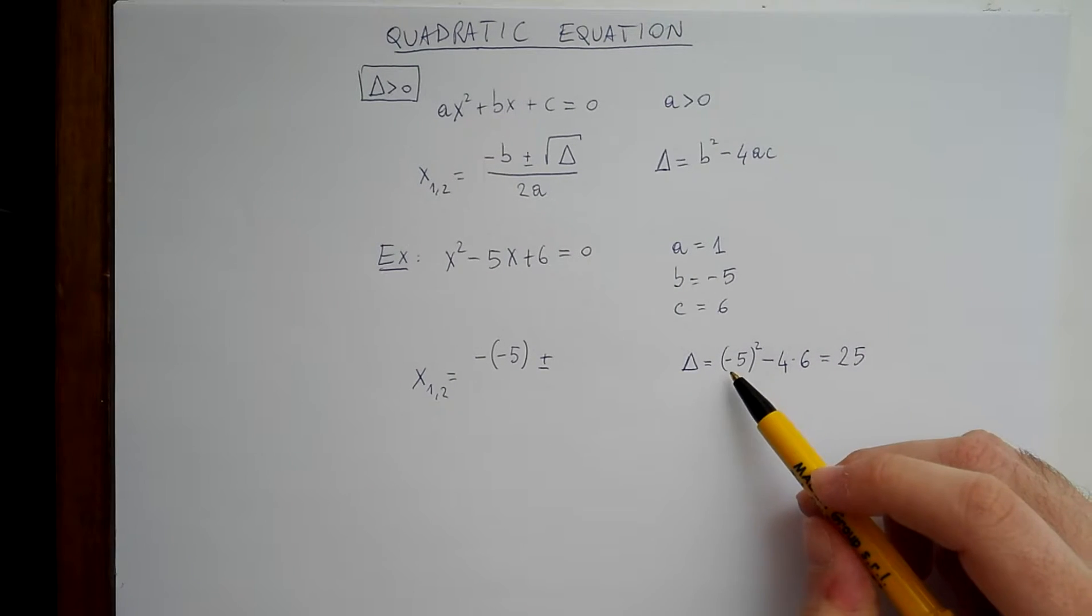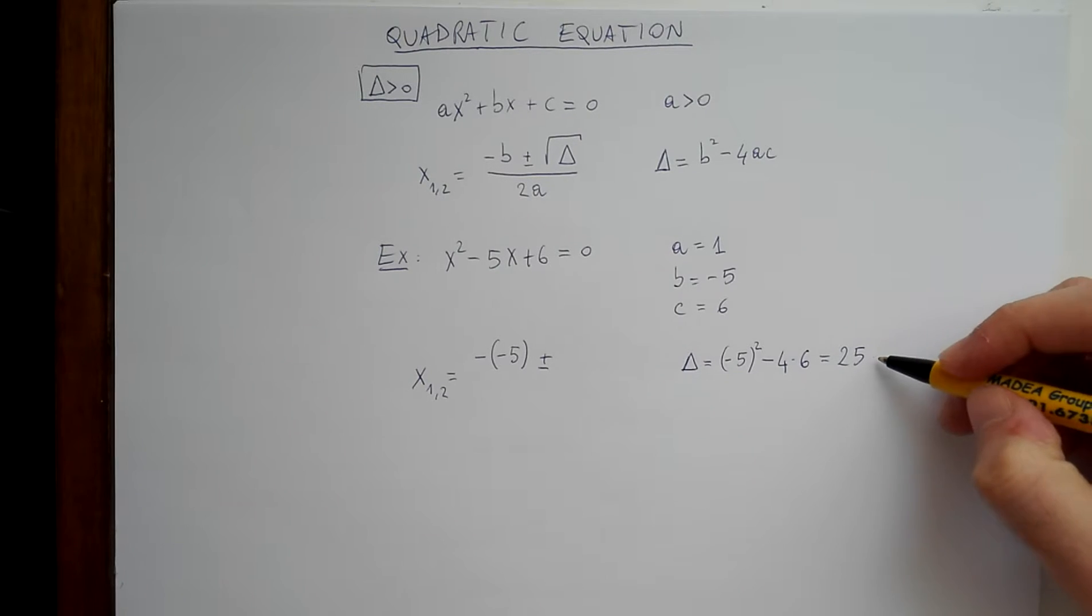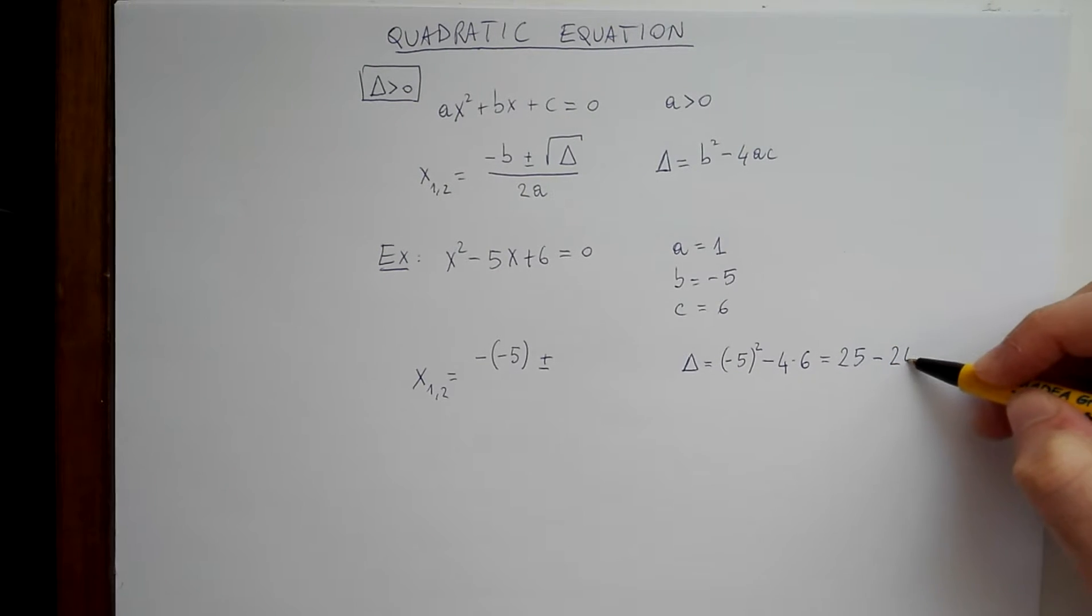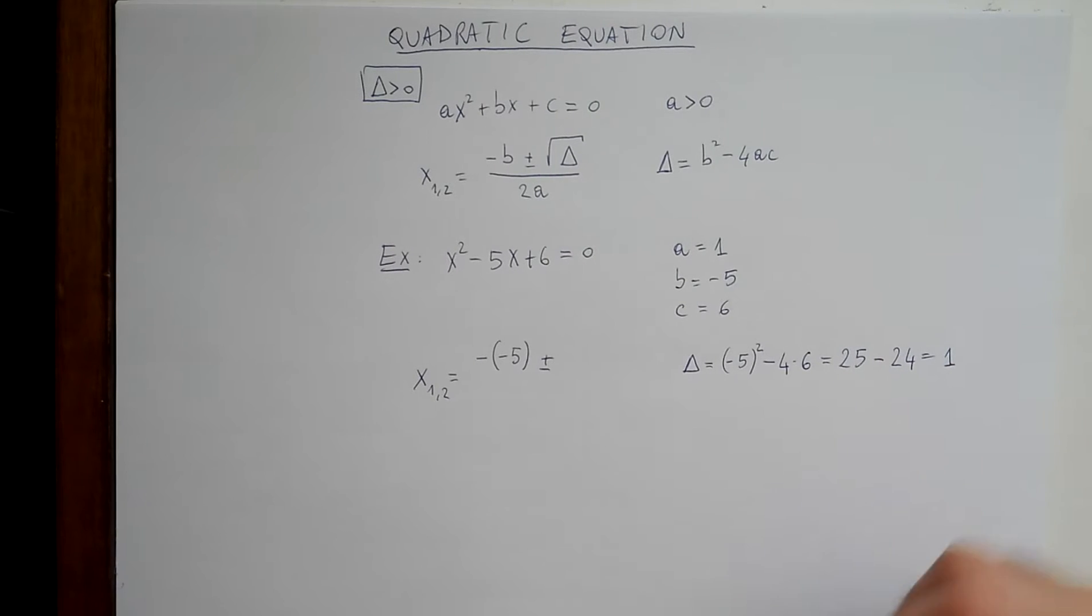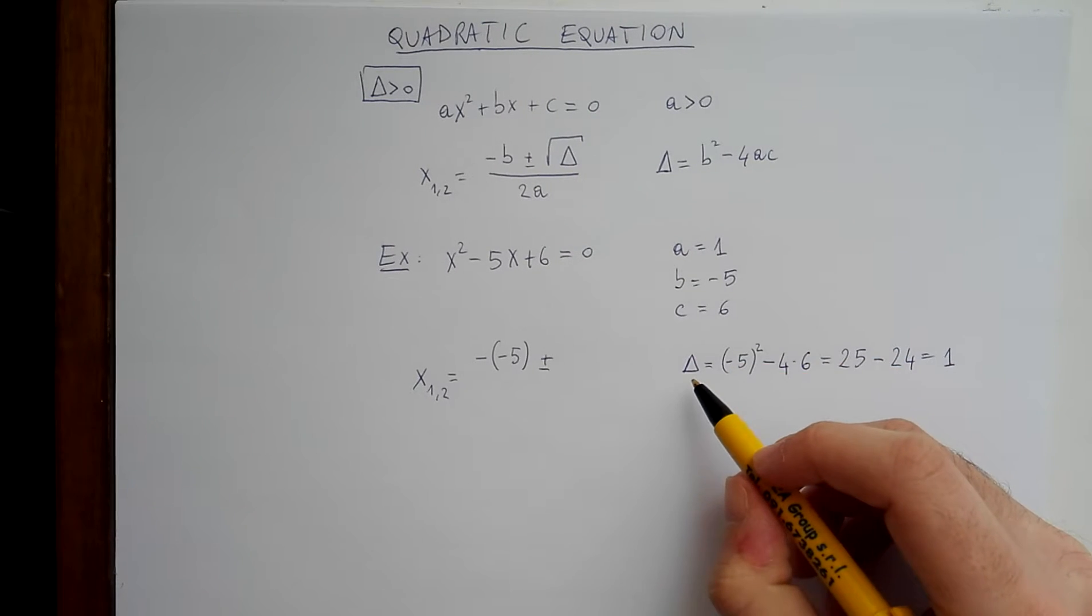because minus times minus, it's plus, minus 24, so 1. So delta is 1.